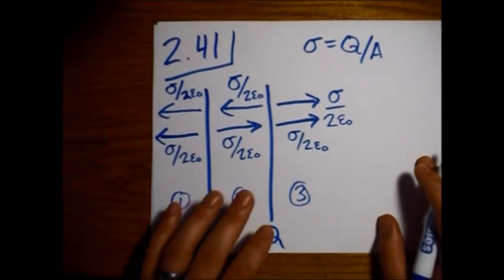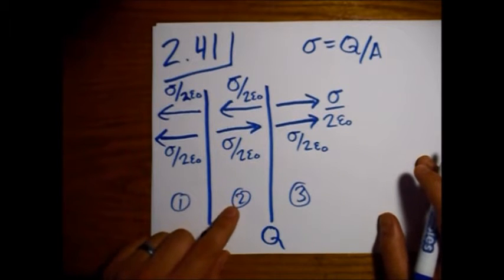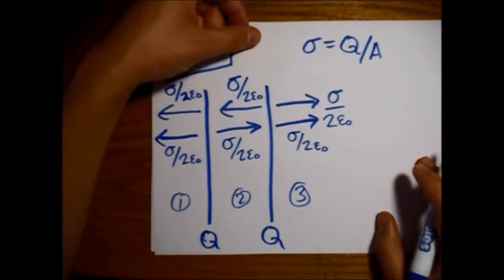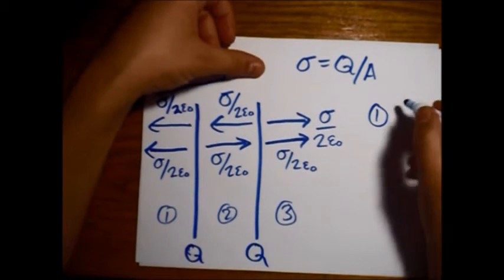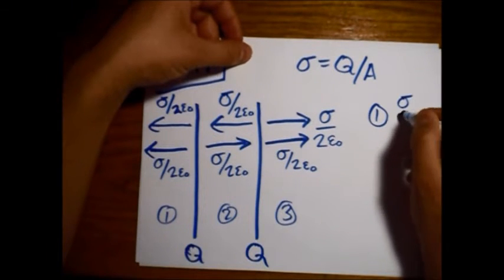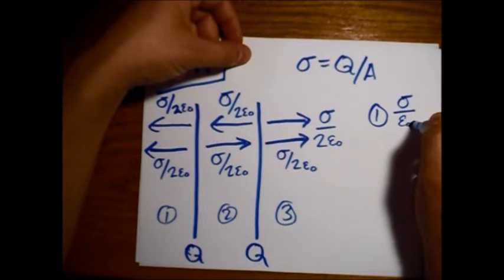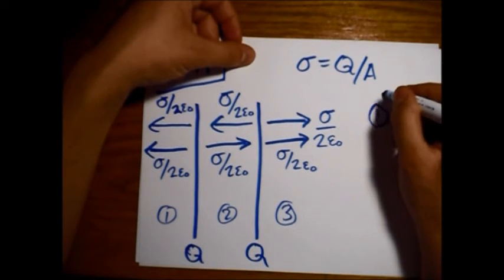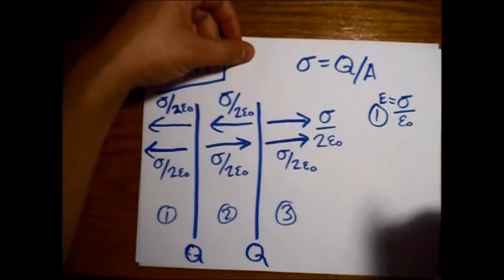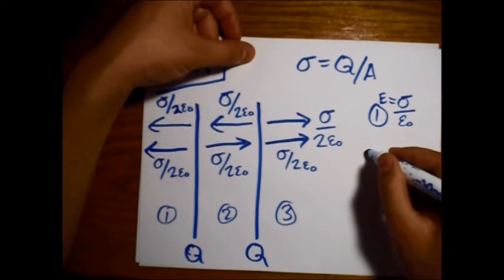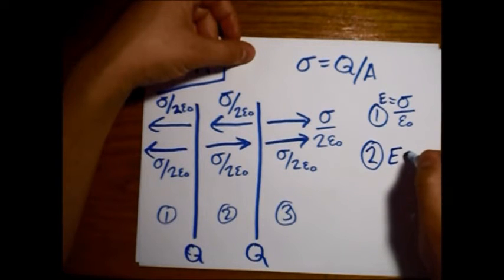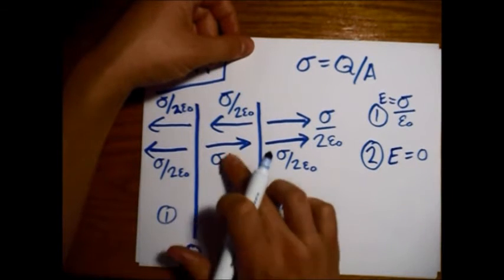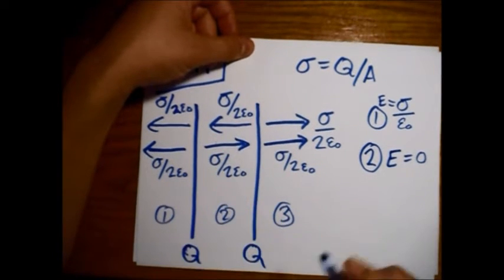So when we add up the field in these three different regions, in region 1, these two halves will give us sigma over epsilon-naught. So the magnitude of the E field. In region 2, the magnitude of the E field is equal to 0, because these two are going in different directions, and it cancels out.